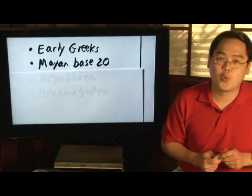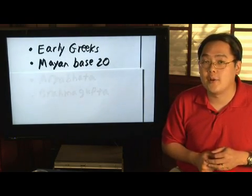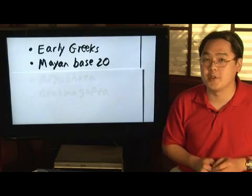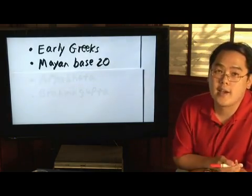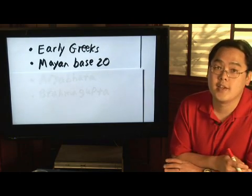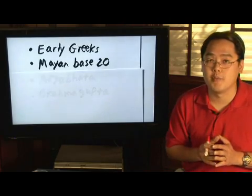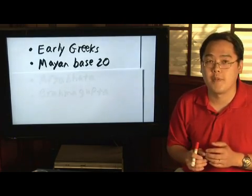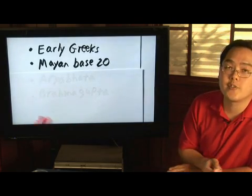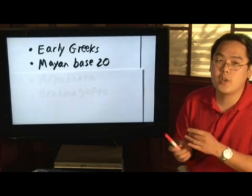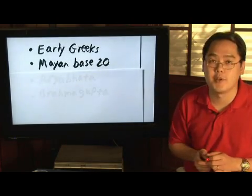The Mayans were forerunners of a lot of things, including mathematics. They were always using the number zero, but they had a base 20 system. We have always used a base 10 number system, and our system is based off of the Hindu-Arabic number system. But because the Mayans used the number zero in a much different system, there weren't really a lot of rules in place as to how to use it in other number systems.